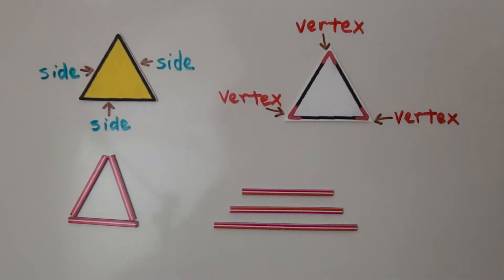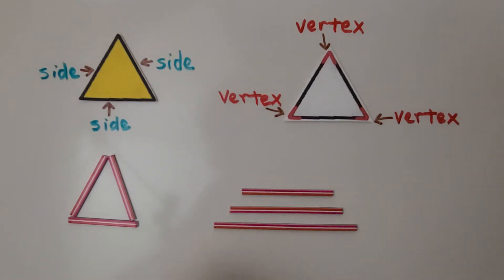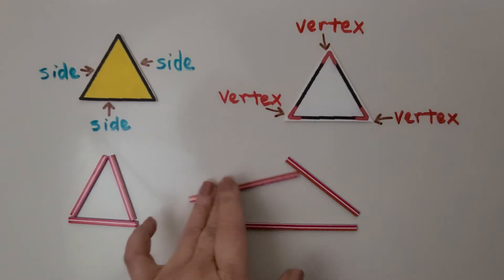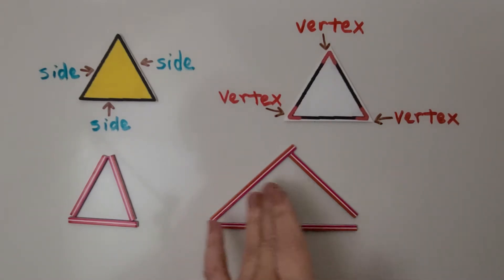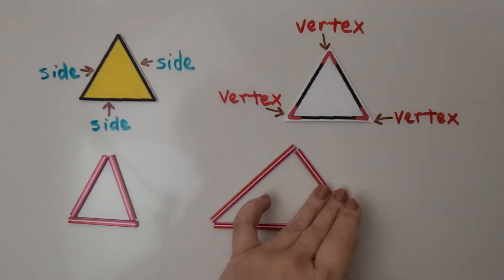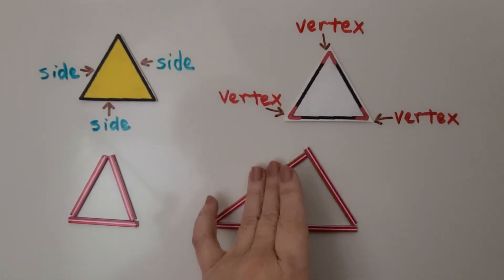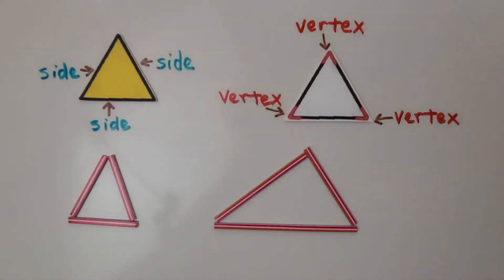We can even make a triangle from lines that have different lengths. So here's a long one, a medium one, and a short one. And we can move these around and make a triangle from three different lengths. It's still a triangle — it still has three straight sides and three vertices.